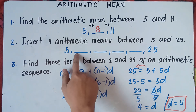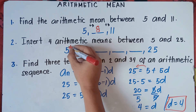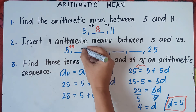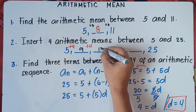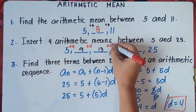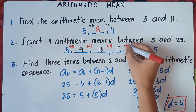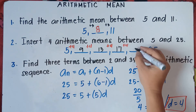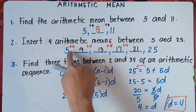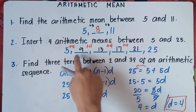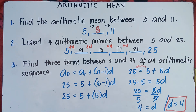Since our common difference is 4, we add 4 to 5 to get 9, then 9 plus 4 is 13, then 13 plus 4 is 17, then 17 plus 4 is 21, and 21 plus 4 gives us 25. Checking: 9 minus 5 is 4, 13 minus 9 is 4 — the common difference is correct. So the four arithmetic means are 9, 13, 17, and 21.